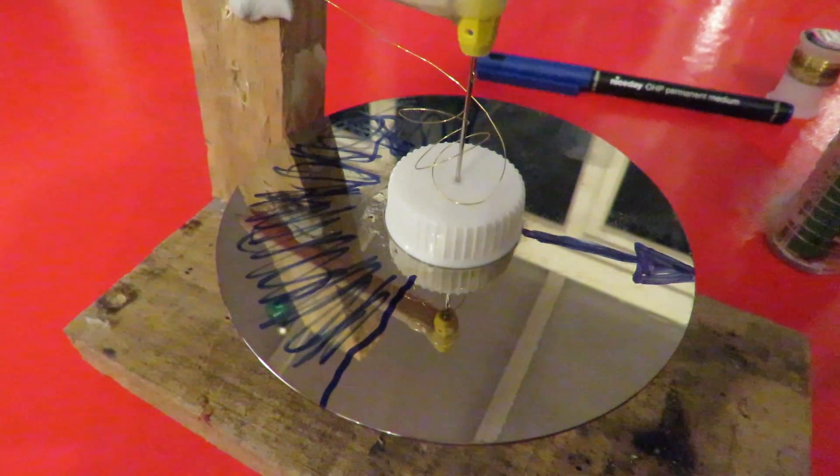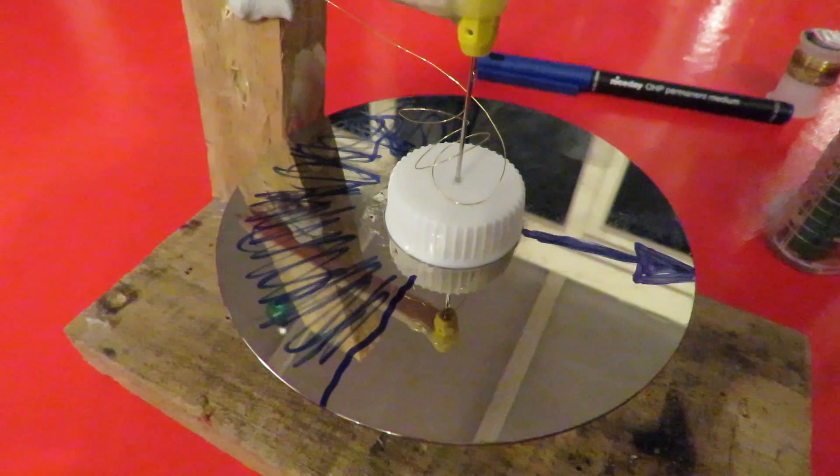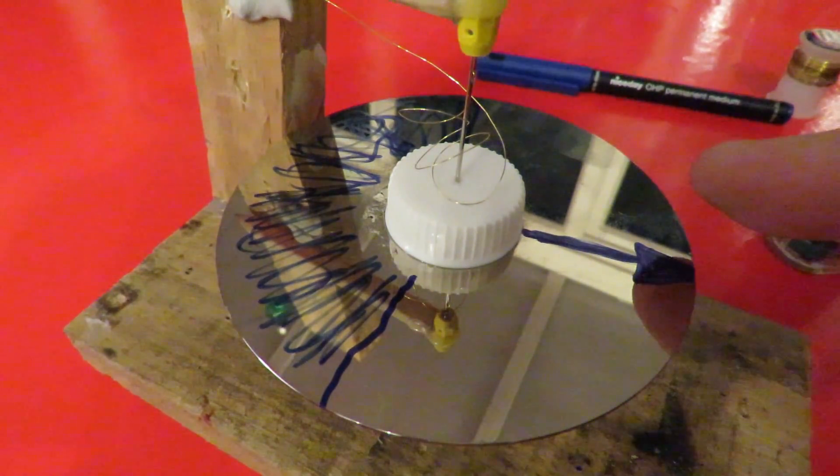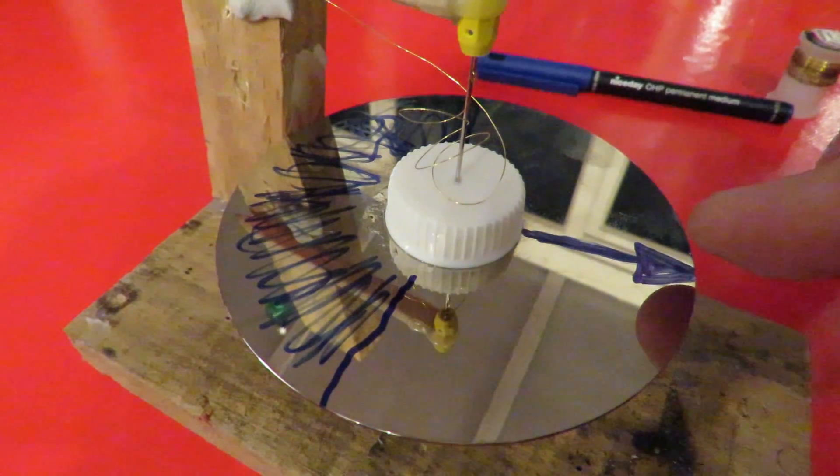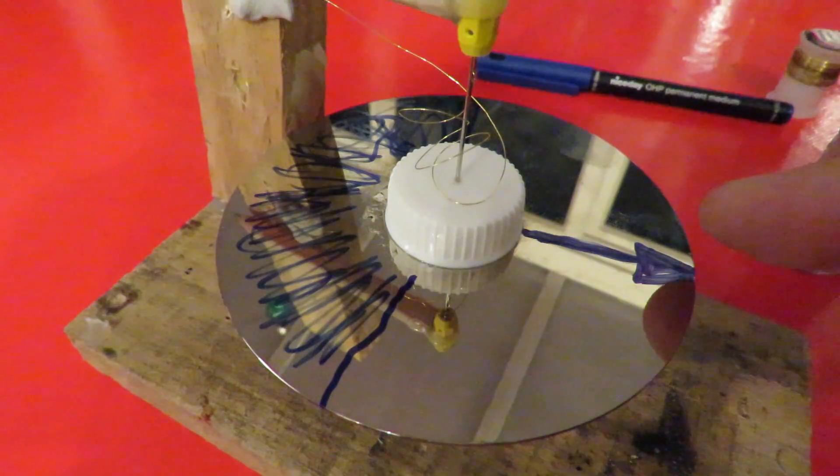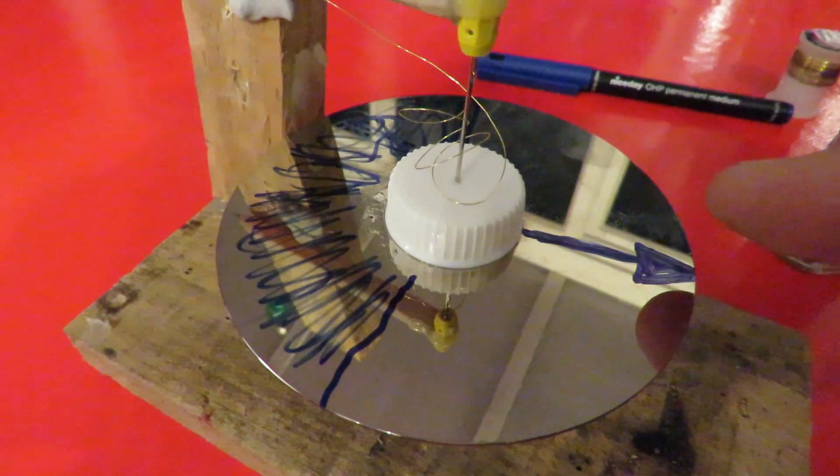They work in a similar way. There's a magnet spinning which turns an aluminium disc which is attached to a needle or an arrow that indicates the speed that the car's going at.